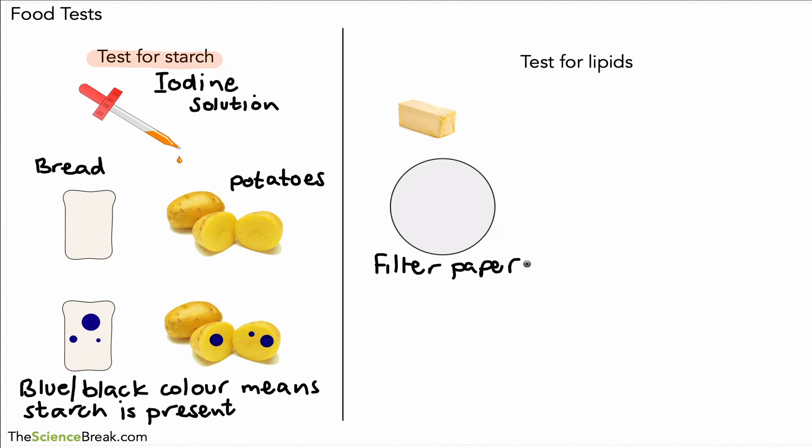We take our sample of lipid, in this case butter, and simply rub it on the filter paper. The result, if we have lipid, is that the filter paper will go translucent - that means it's partially see-through. If you hold it up to the light, you can see it's partially see-through because we have a sample of lipid there.